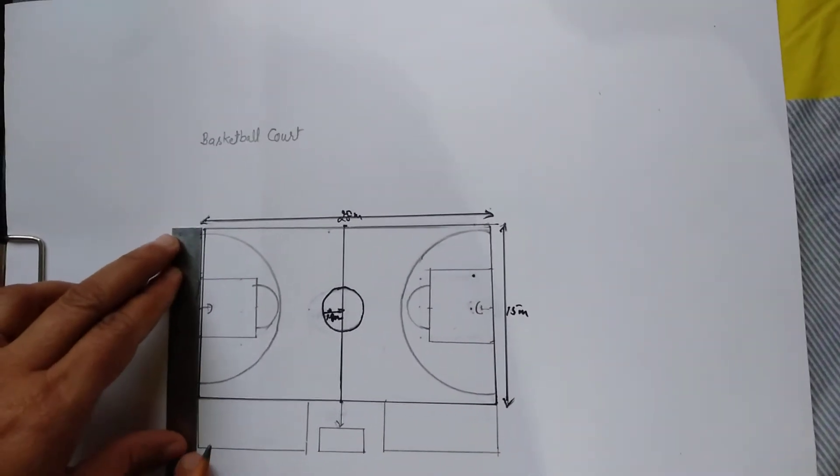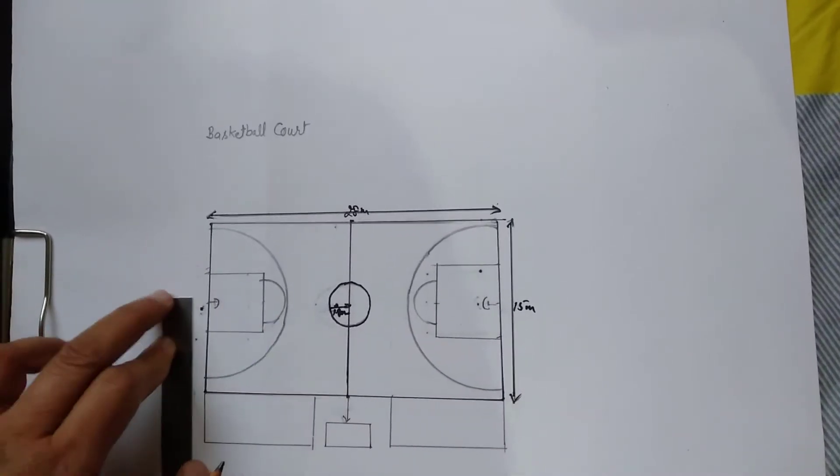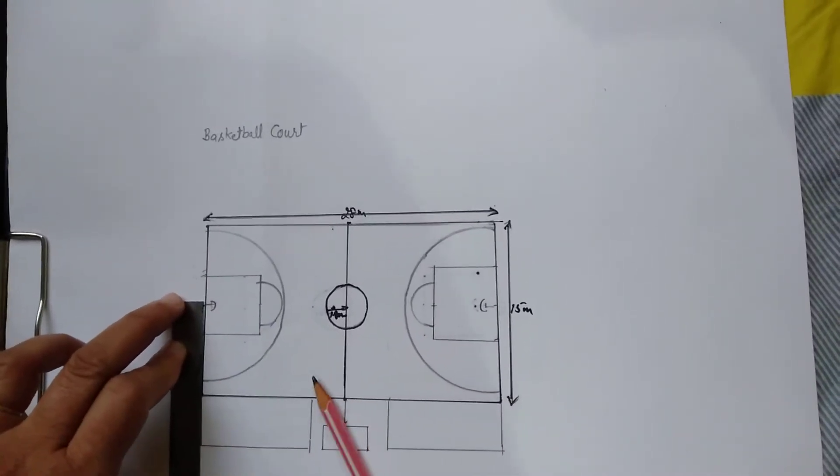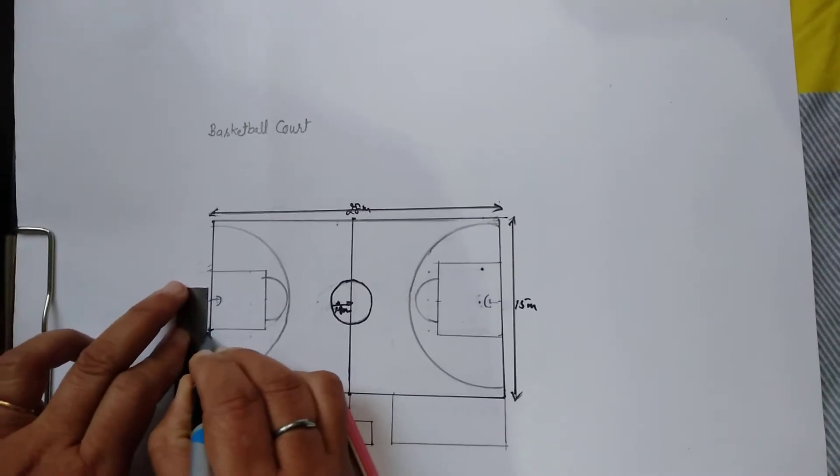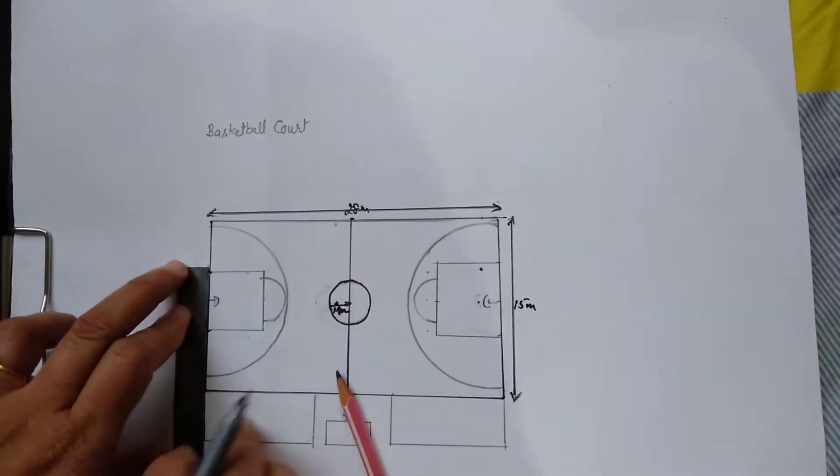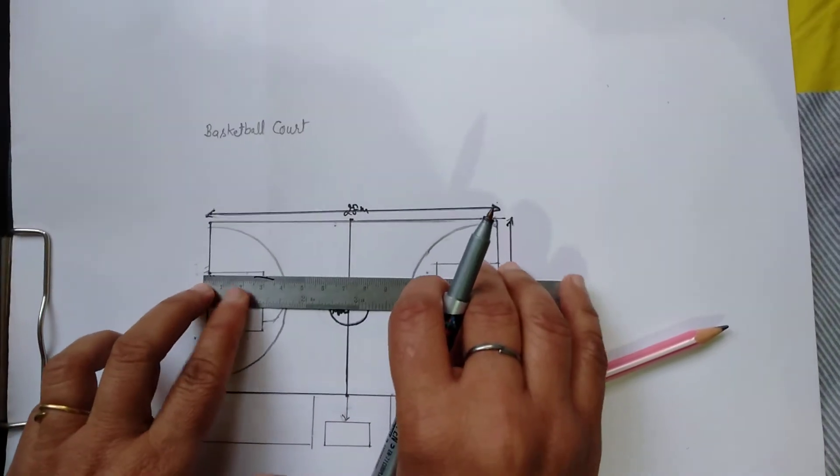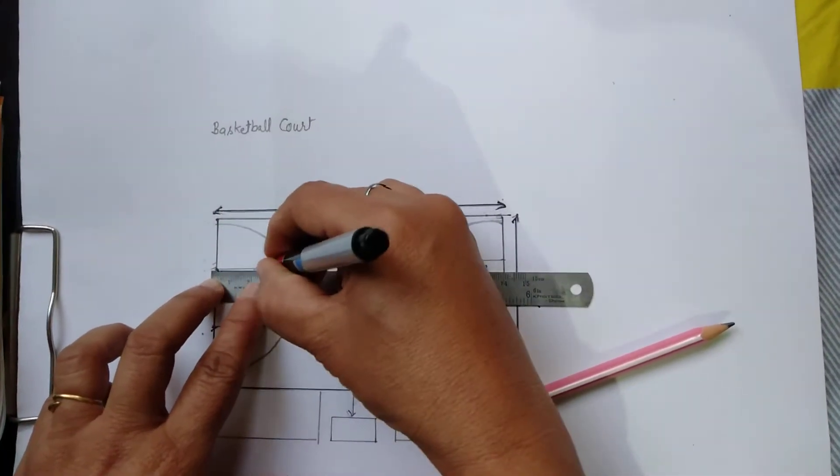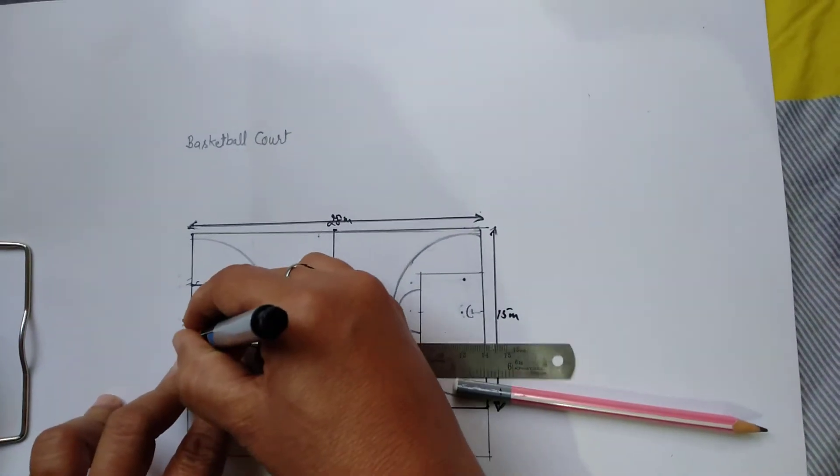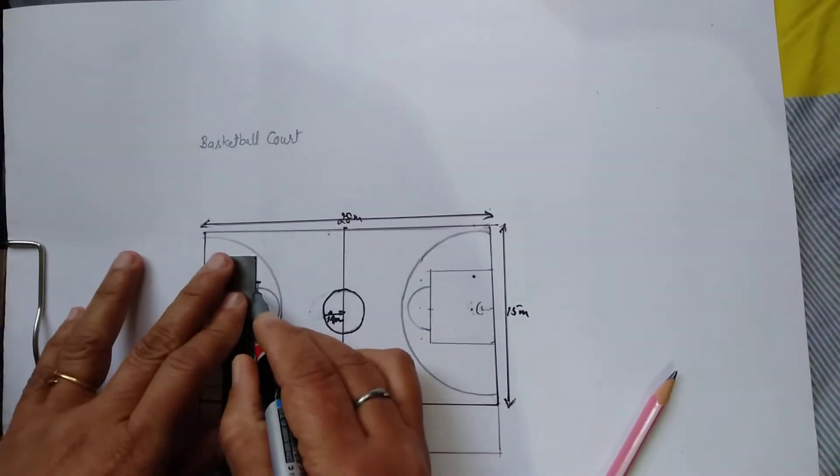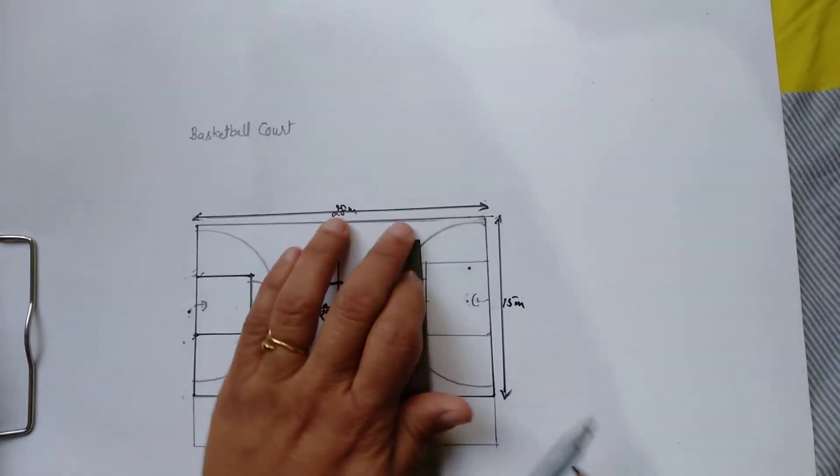This side and one and a half this side. Inner side three centimeters. We make this rectangular box. Same on this side.